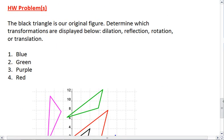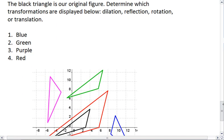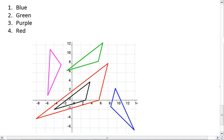This brings us to the homework problems. In the picture below, the black triangle is your original figure. I want you to determine whether the transformations displayed below are dilation, reflection, rotation, or translation. You're given the black figure as the original, so tell me if the blue, green, purple, and red are dilation, reflection, rotation, or translation.